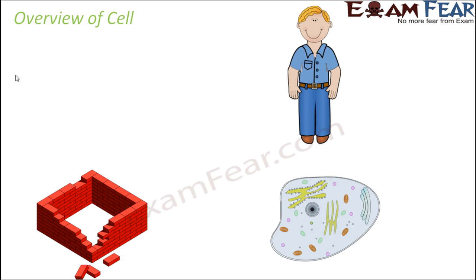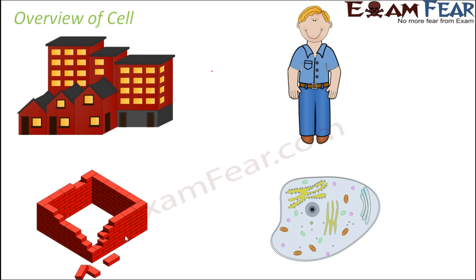Let us quickly look at an overview of the cell. By now we know how the cell was discovered and how the cell theory came into picture. When you talk about any living organism — here you can see a person — his body is also made up of many cells. One cell looks somewhat like a brick used to build a building; similarly, many cells joined together form the entire organism.